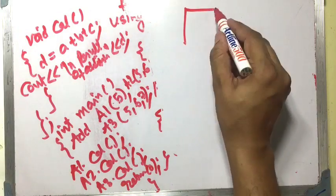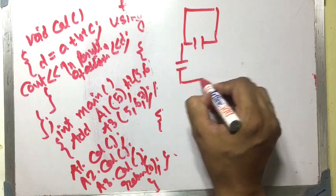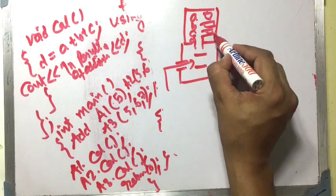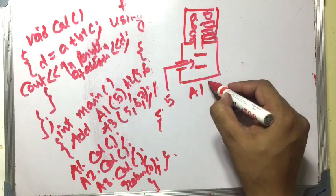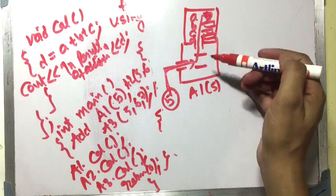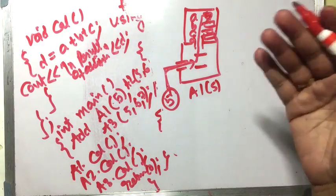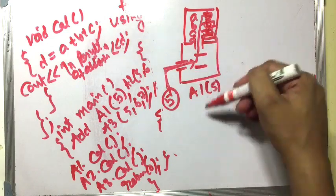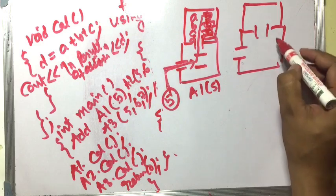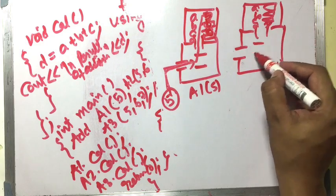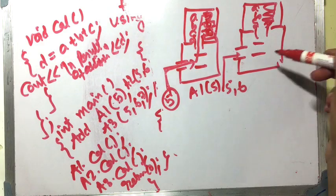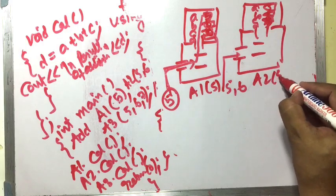Looking at the diagram, there is object a1 with a private part (a, b, c, d) and a public part containing the constructor and the display function. When we call a1 passing only 5, the constructor receives 5, x transfers 5 to a, and the missing parameters b and c hold the default values y equals 10 and z equals 20.